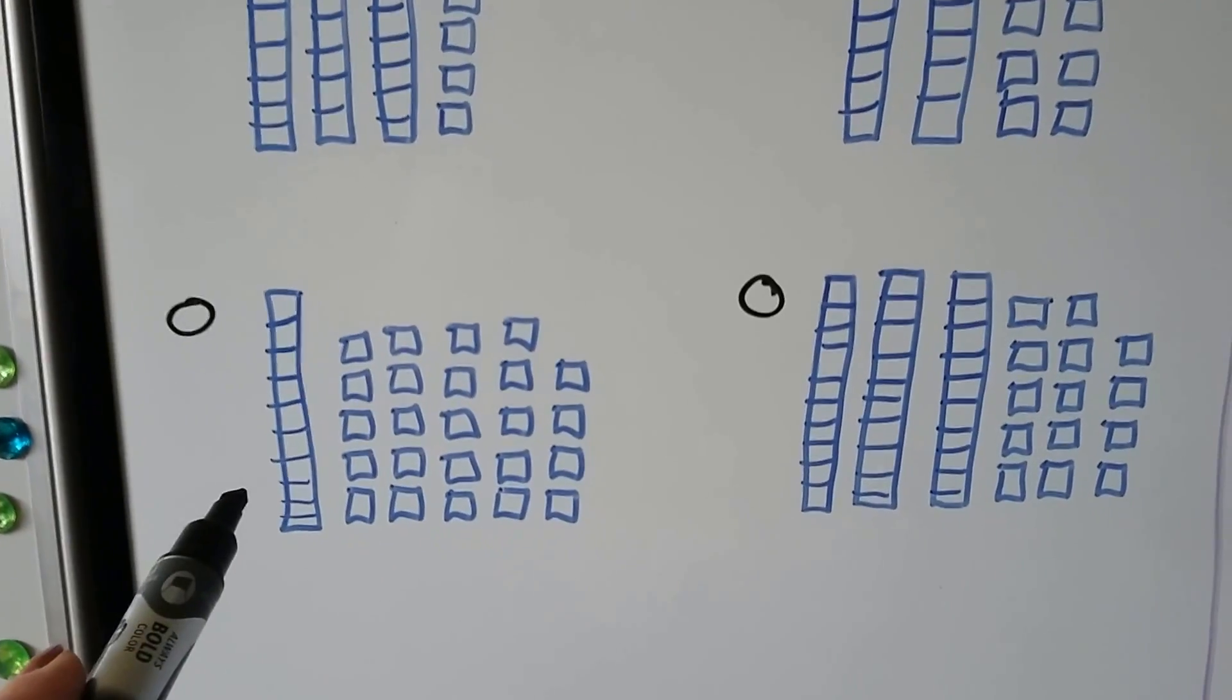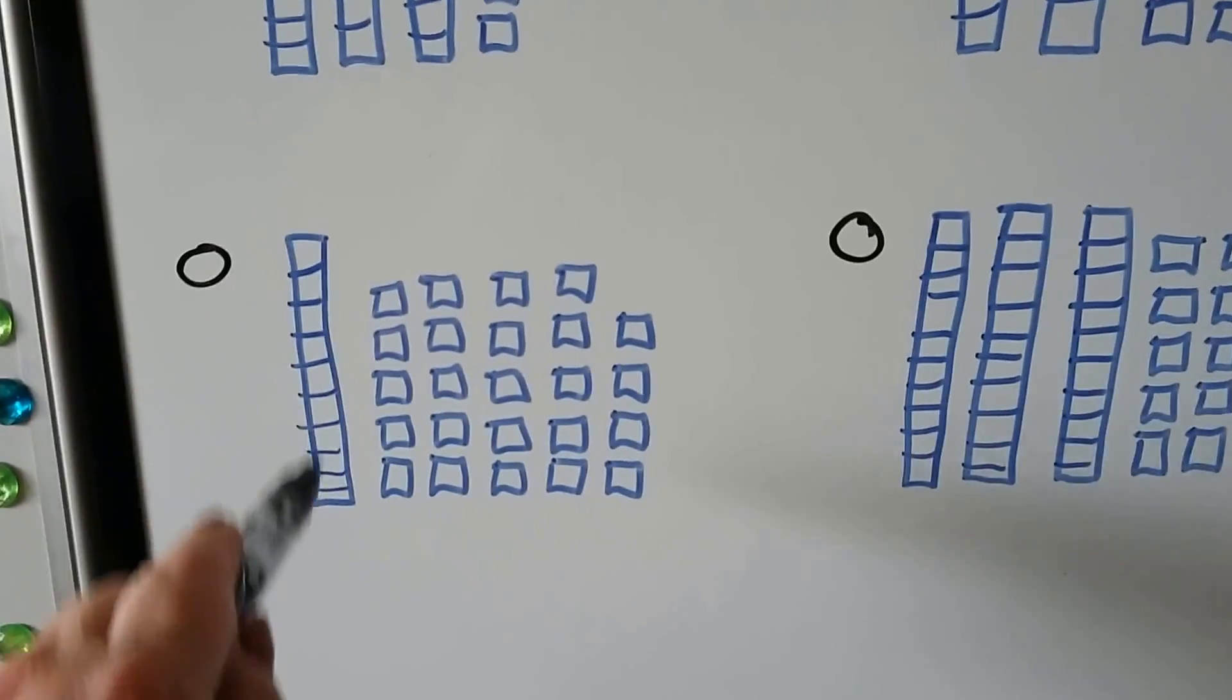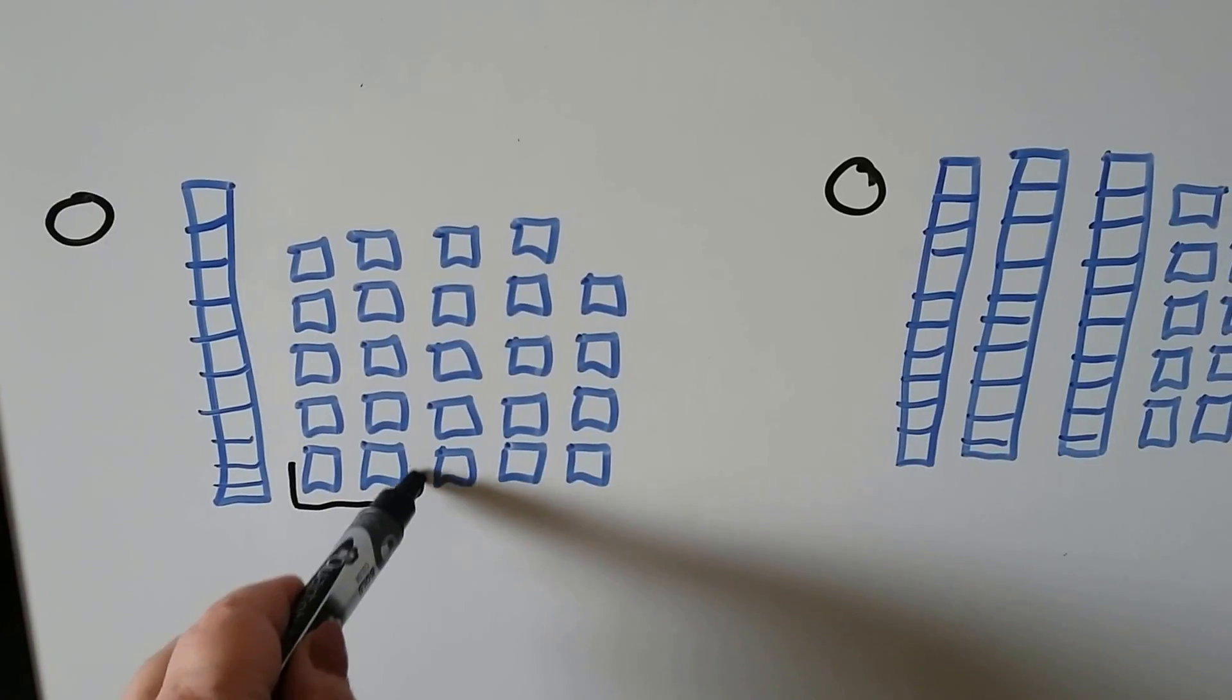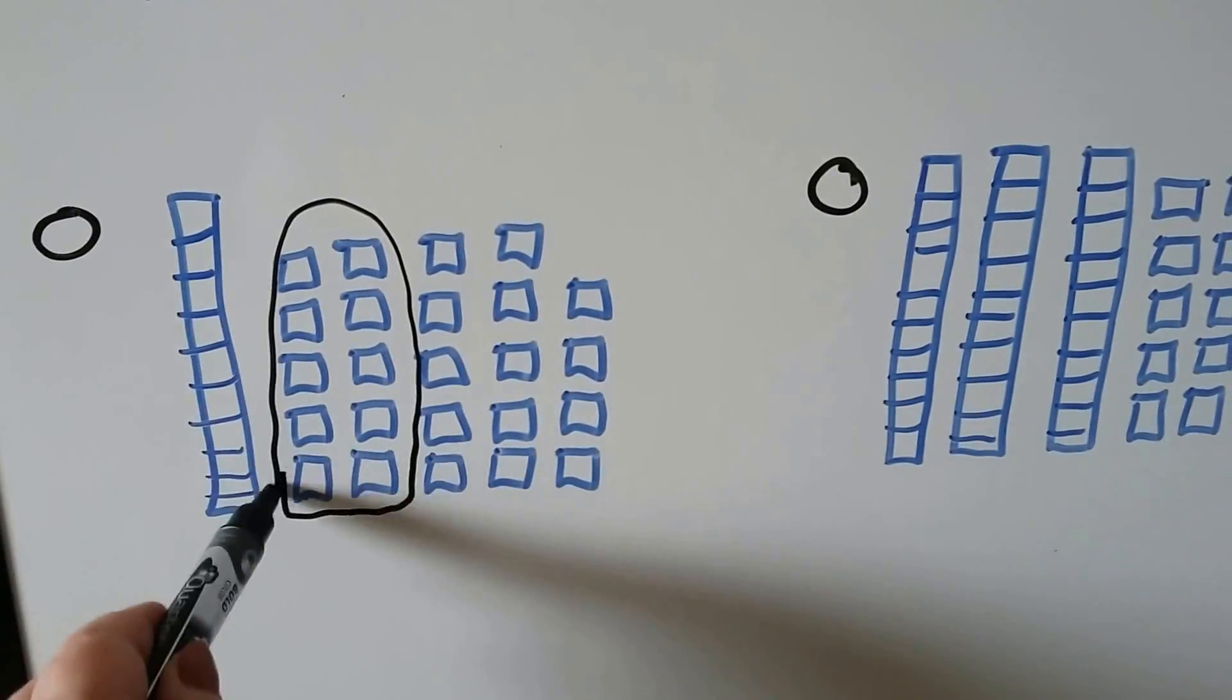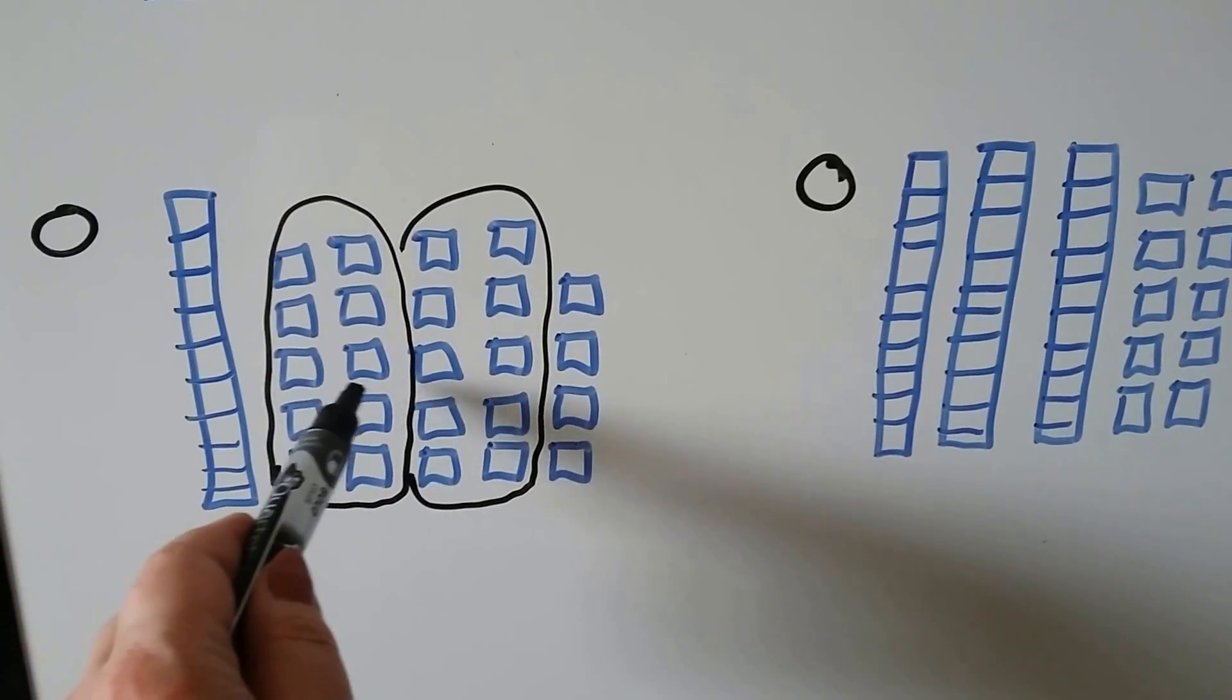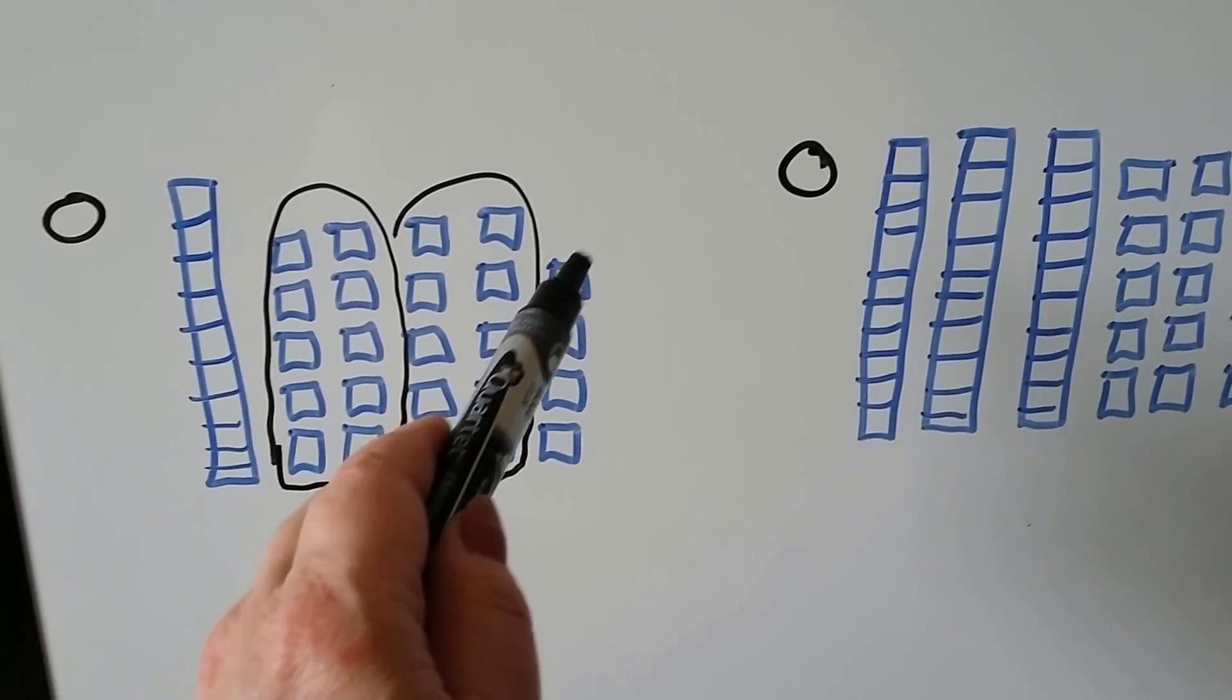What about this one? Does this show 34? We have one 10 here and we've got another one here. We've got another one here because five plus five makes a 10, doesn't it? So we have one, two, three tens and one, two...